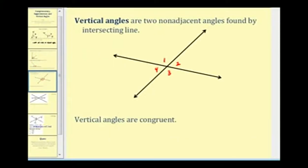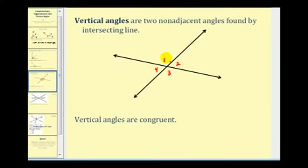The last special pair of angles we'll look at are vertical angles. Vertical angles are two non-adjacent angles found by intersecting lines. Looking at this diagram, angle one and angle two are adjacent, but angle one and angle three are non-adjacent angles formed by two intersecting lines. So angle one and angle three are vertical angles, and angle two and angle four are vertical angles.